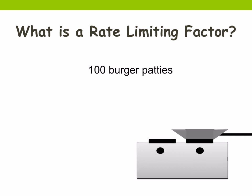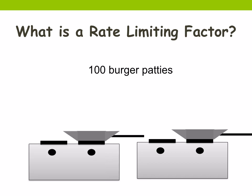Now suppose you had 100 burger patties but only one stove. Working as fast as you could, you could perhaps make 50 burgers at tea time. So what if you had two stoves? You would double your rate. So the number of stoves would be your rate-limiting factor.